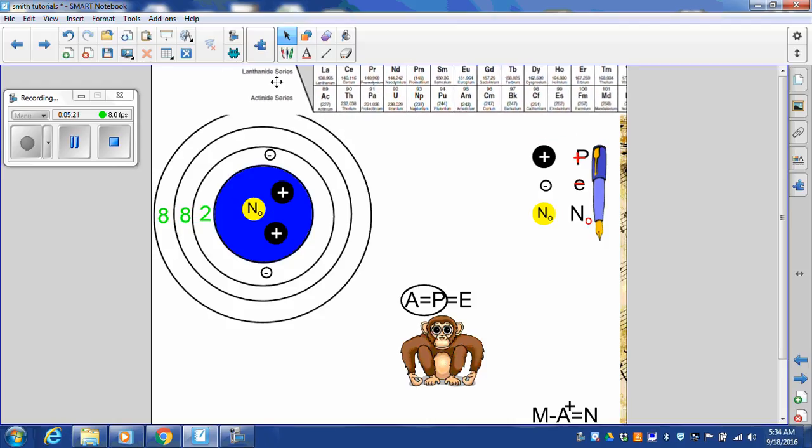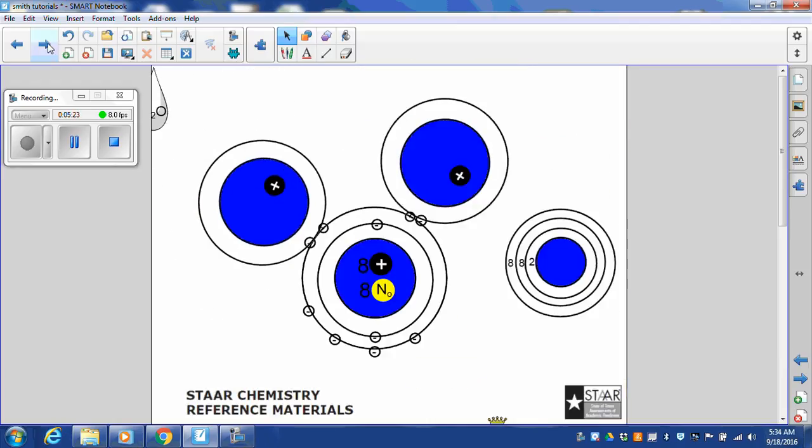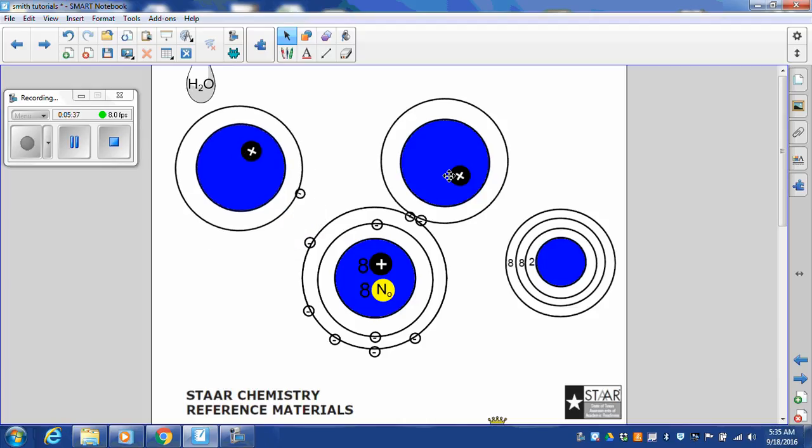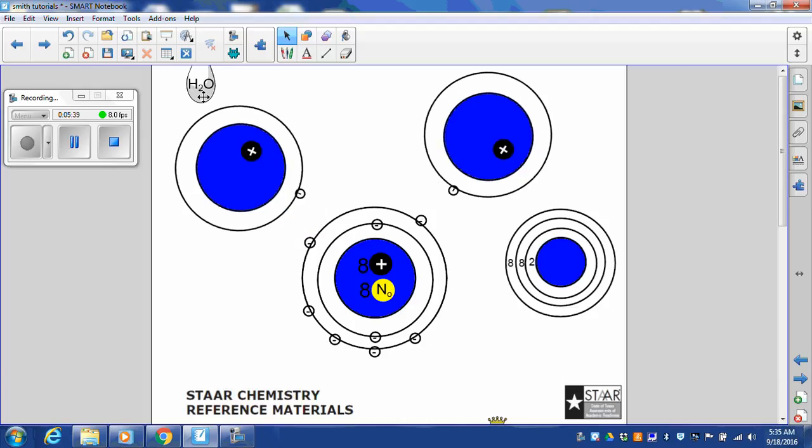All of the other elements want to be like the noble gases. So they pretend. I'm going to show you. We're going to do a water molecule. Pretty much everyone knows that water is H2O. It has two hydrogens. Here is hydrogen. Here is the other hydrogen. And then this is oxygen.